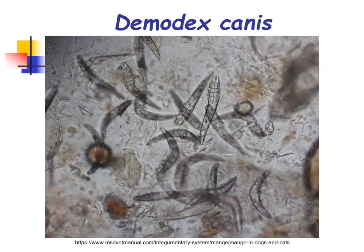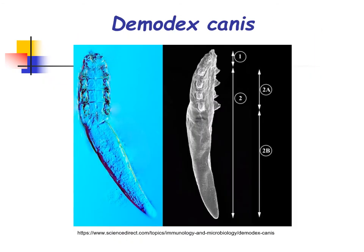This diagram shows the demodex canis under light and scanning electron microscopy. The length of mites varies between 150 and 285 micrometers. Similar to other mites, the general structure of demodex consists of the head or gnathosoma with its mouthparts, the trunk or idiosoma, and the extremities. The elongated cigar-like idiosoma, ring-like segmentation of the opisthosoma, and very short legs are characteristic features of demodex.